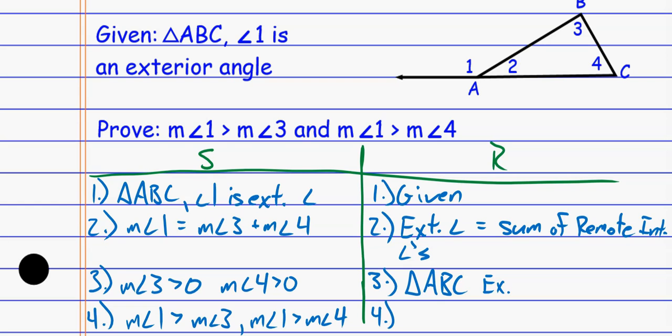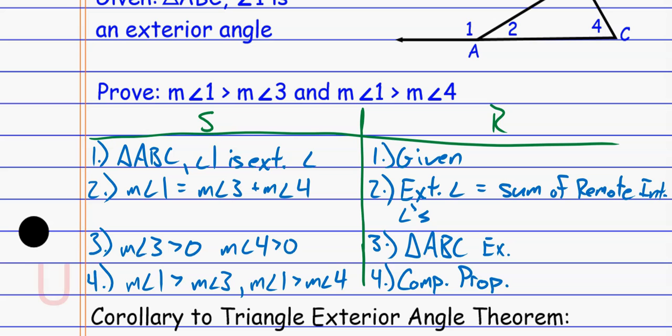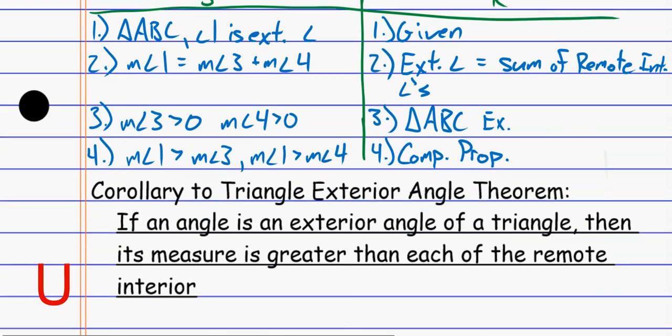This probably seems really obvious, but we want to do the proof so that we can use this from here on out. That's the only proof we'll do today. The rest will just make assumptions about the proofs because they all go back to this same concept — showing that this angle plus this angle equals this one, and these two compare this way because this one was the sum of those two.